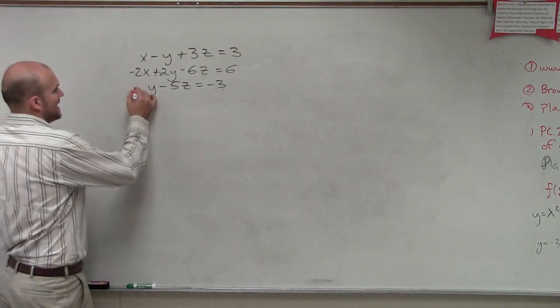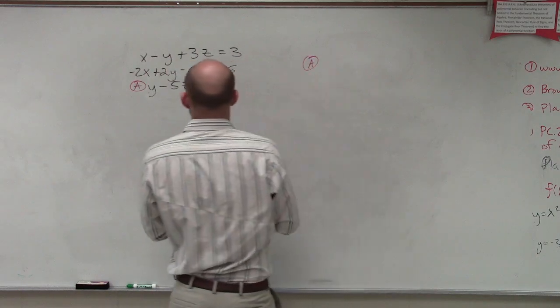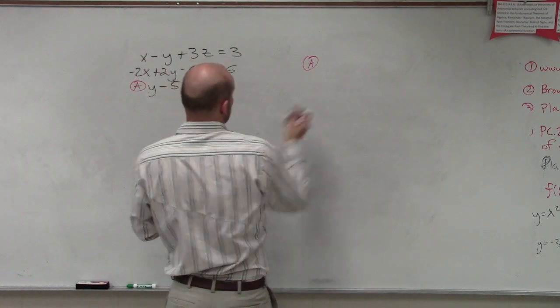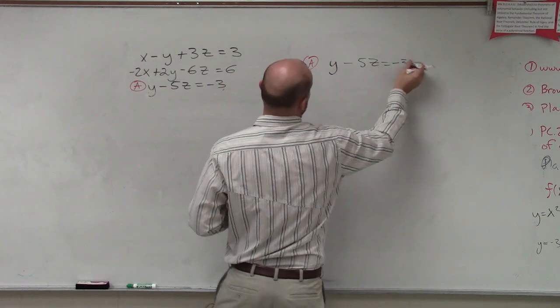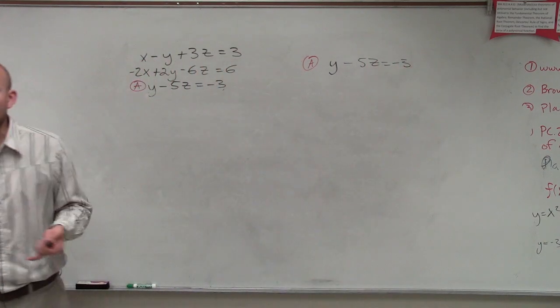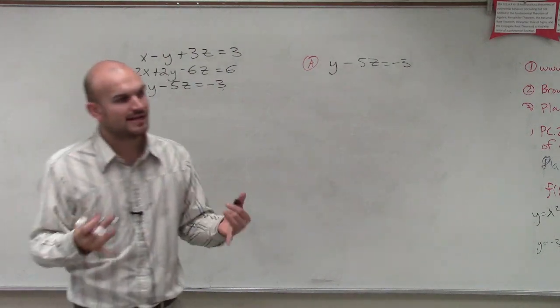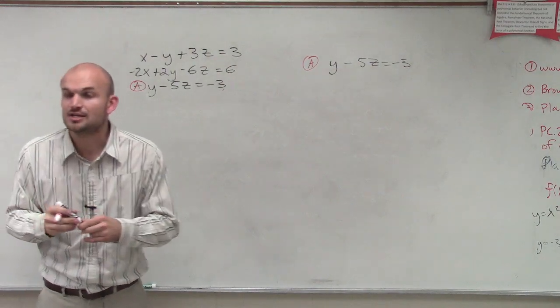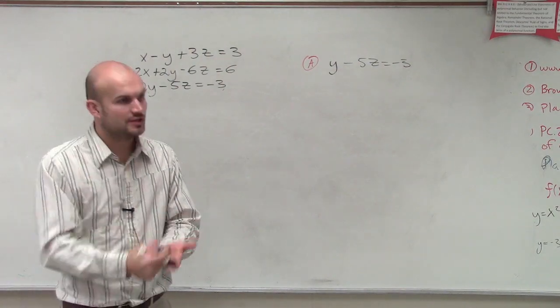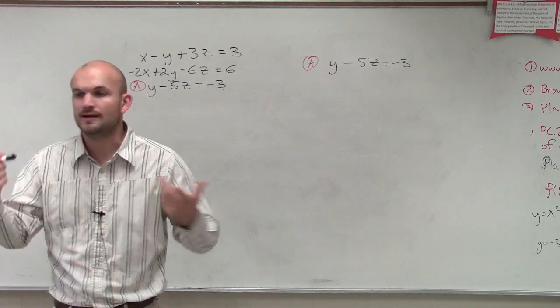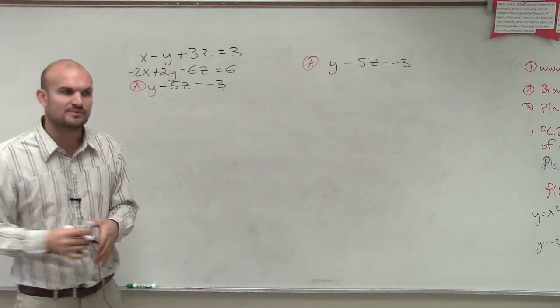So I'm going to immediately label that a. I'm going to write a over here, which is y minus 5z equals negative 3. Remember, our main goal is to take our three equations and to write them down to two equations. When you have a system with only two equations and two variables, we can use elimination or substitution to solve for our two variables.